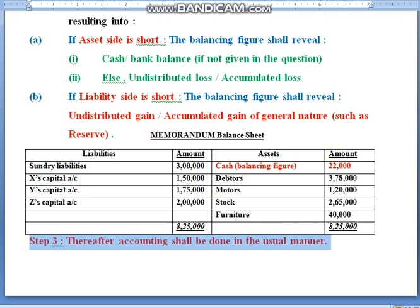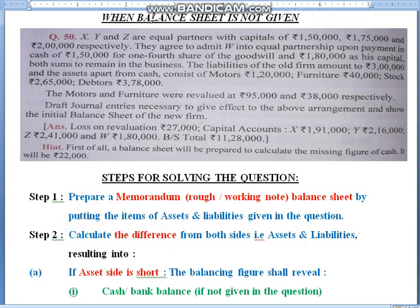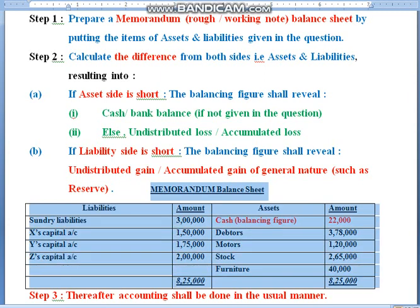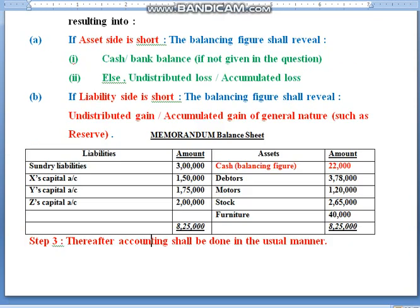I assume this is quite clear. After seeing this video you are supposed to solve this question and get the answers. You only need to convert the paragraphic information into the form of a balance sheet — that is, convert the raw material given in the question into finished goods — and then proceed with journal entries, partners' capital accounts, revaluation, and cash or bank account. The balance sheet is to be drawn in the usual manner. Thank you children.